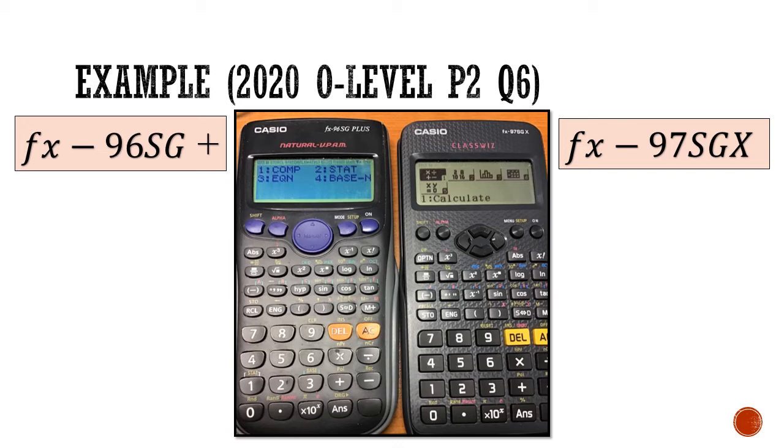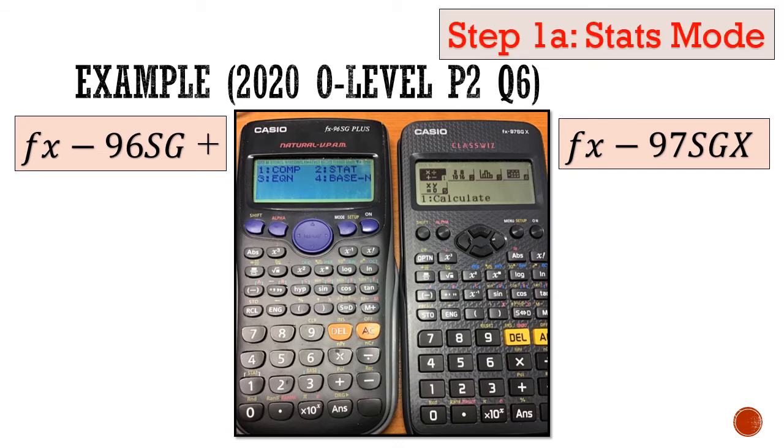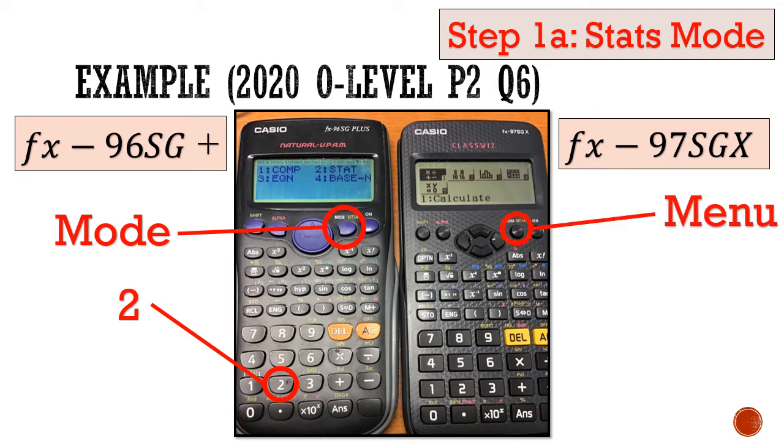So the first thing we want to do is to get into the statistics mode. So for the 96SG, you're going to select mode first, and you're going to choose statistics (stat), which is number 2. For the newer 97SGX, you're going to select menu, and you're going to see a list of icons. You're going to select the histogram icon, which is number 3.